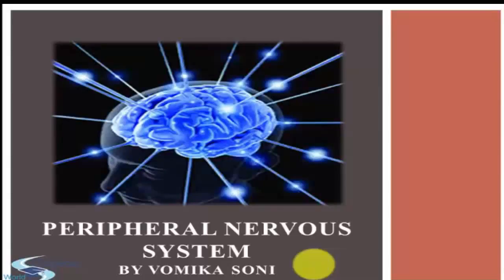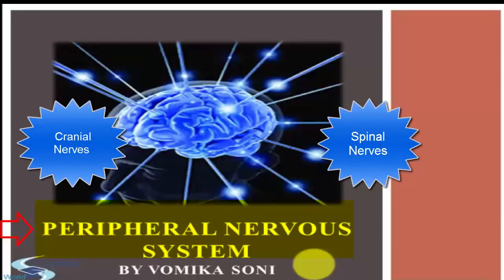Hello everyone, welcome to edupediaworld.com. This is your video lecturer Vomika Soni, and in the current video lecture I will explain you all about the peripheral nervous system. In my previous video lecture I had already discussed about spinal cord. In the current video lecture we will learn about the cranial nerves and the spinal nerves. The peripheral nervous system includes the nerves which carry the impulses to and from the central nervous system. There are two sets of nerves: the cranial nerves and the spinal nerves.